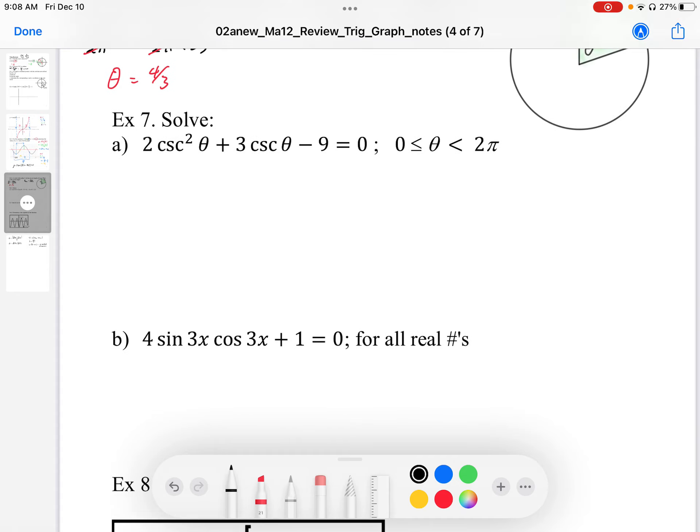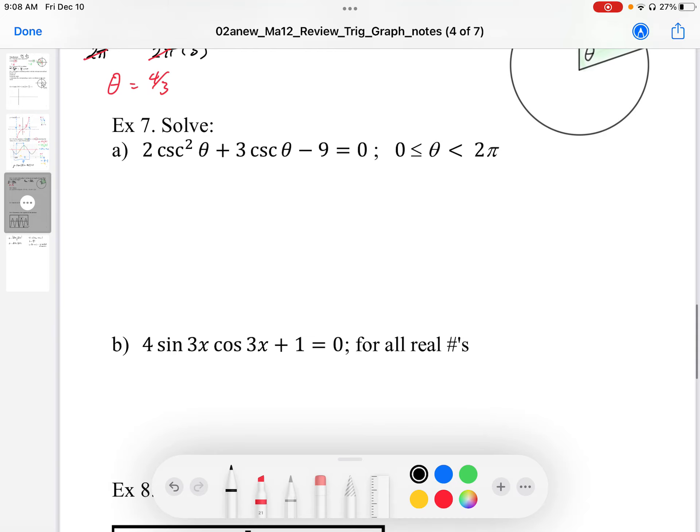When we're solving, we need to first solve the equation. In this case, we have a quadratic equation. So we need to first solve the quadratic equation. Once we've solved the quadratic equation, we can solve for the angle. So the first thing is, I need to factor this. So I'm going to factor this. It's 2 cosecant squared plus 3 cosecant minus 9. So I'm just going to do this in terms of x's.